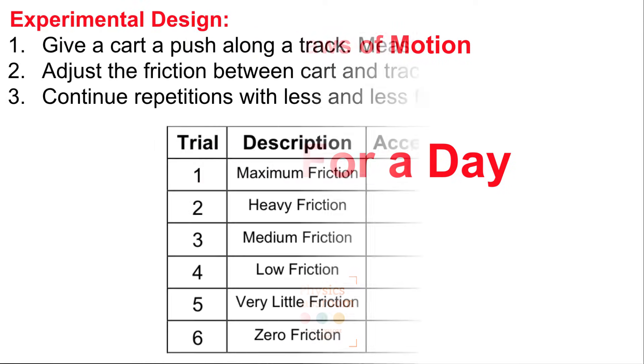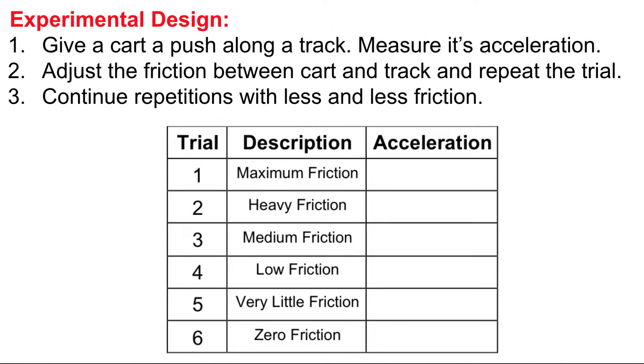We're going to do an experiment very similar to a Galileo experiment. We're going to give a cart a push along a track, but we're going to use a motion detector and measure the acceleration of the car. Then we'll adjust the friction between cart and track and repeat trials for less and less friction.